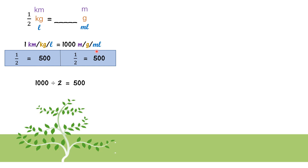So each part is five hundred. The unit depends on the question — you can write 500 m, 500 g, or 500 mL depending on what is asked. So one over two equals one part, which is five hundred.